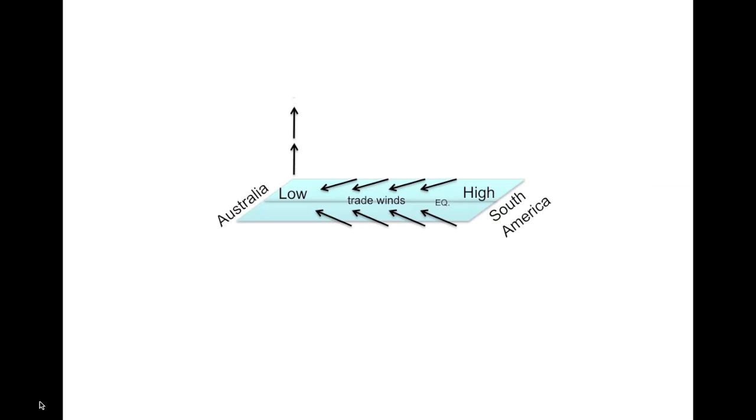Once these winds converge near Australia, they rise in the presence of the low-pressure region and create clouds and precipitation. As this air rises, it eventually hits the tropopause, where it is forced to spread out horizontally. As the air flows back across the Pacific toward South America, it will descend above the high-pressure center and complete the loop.